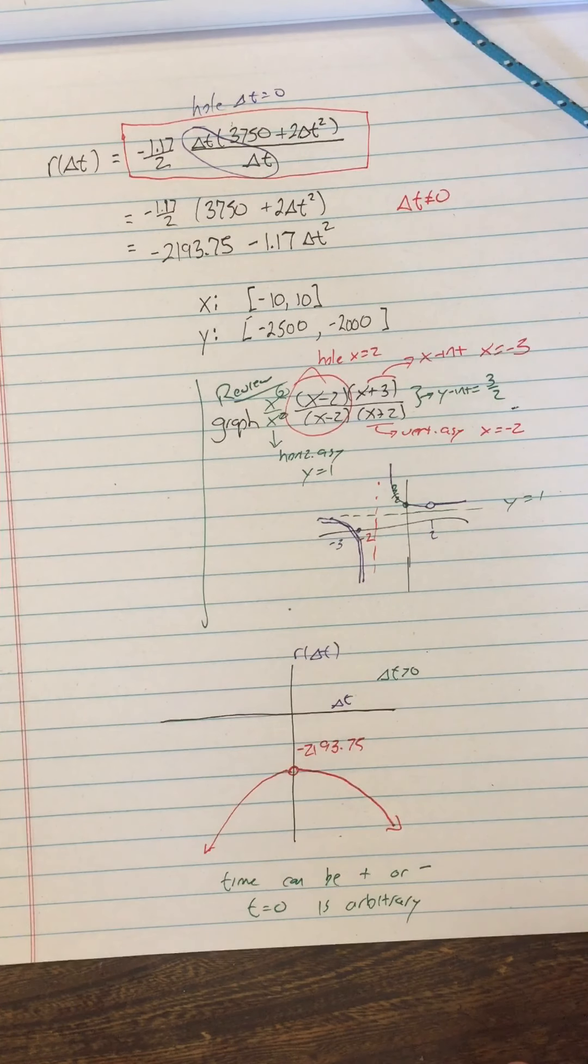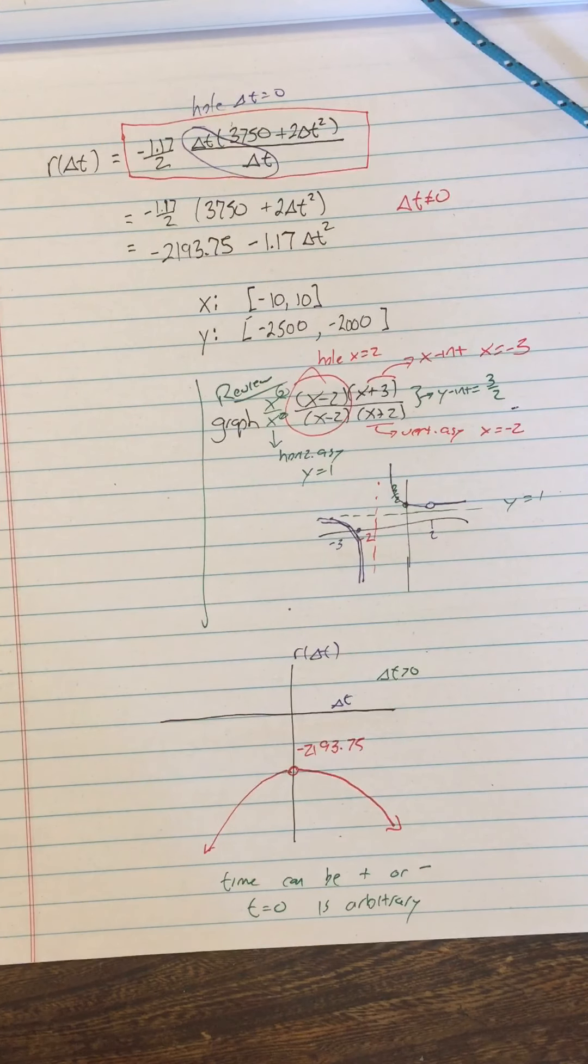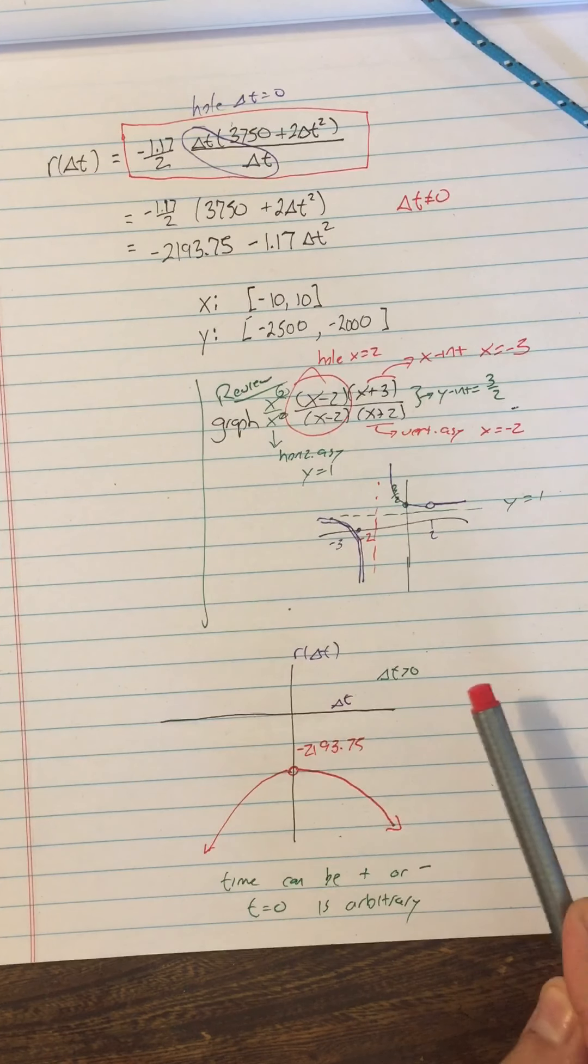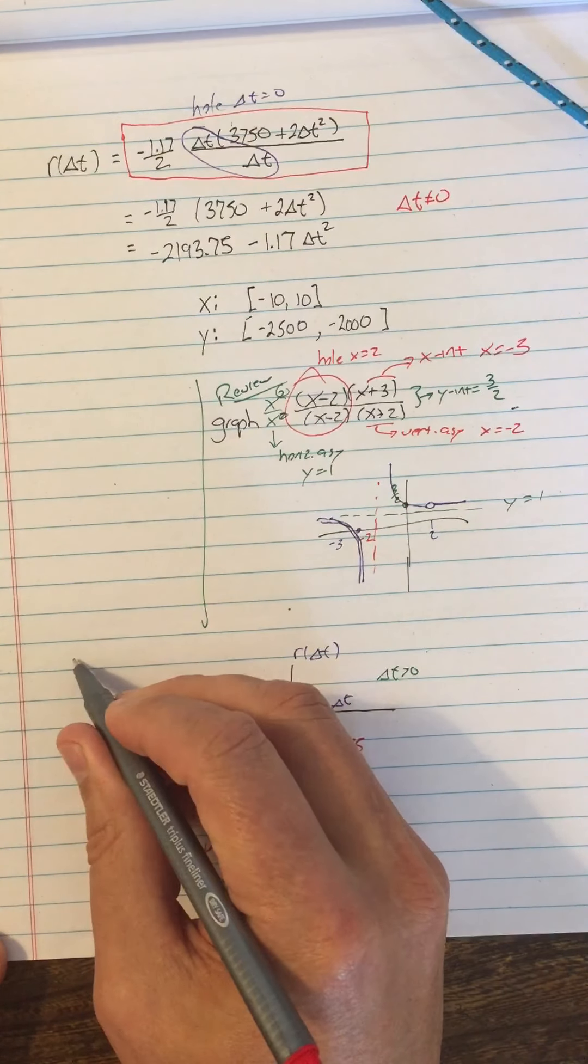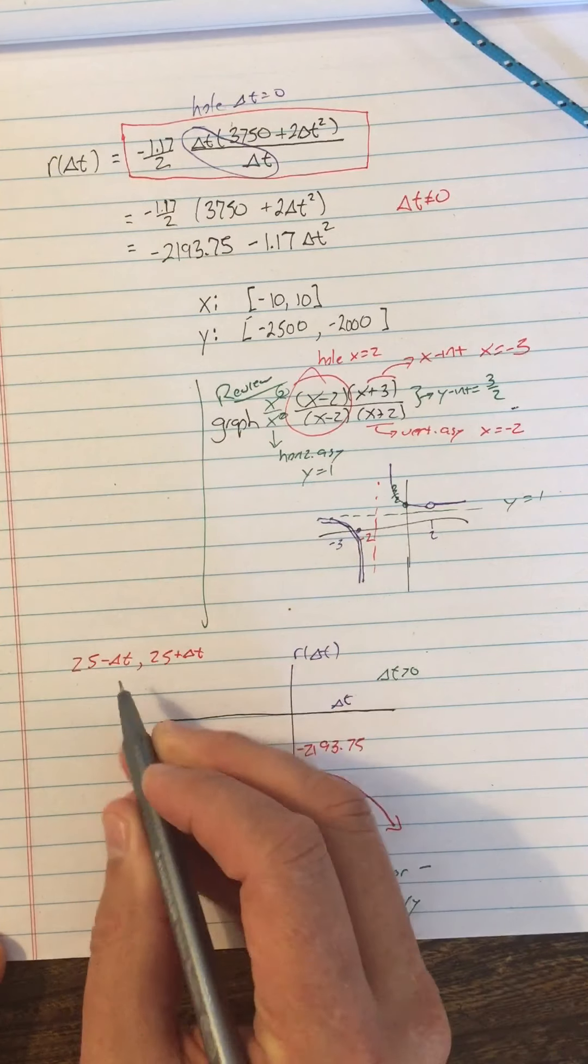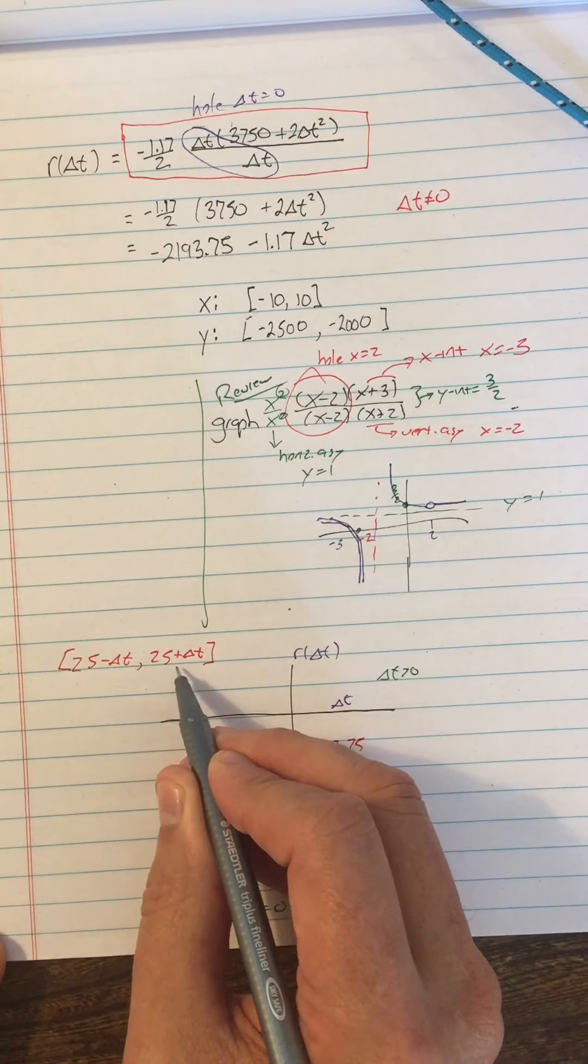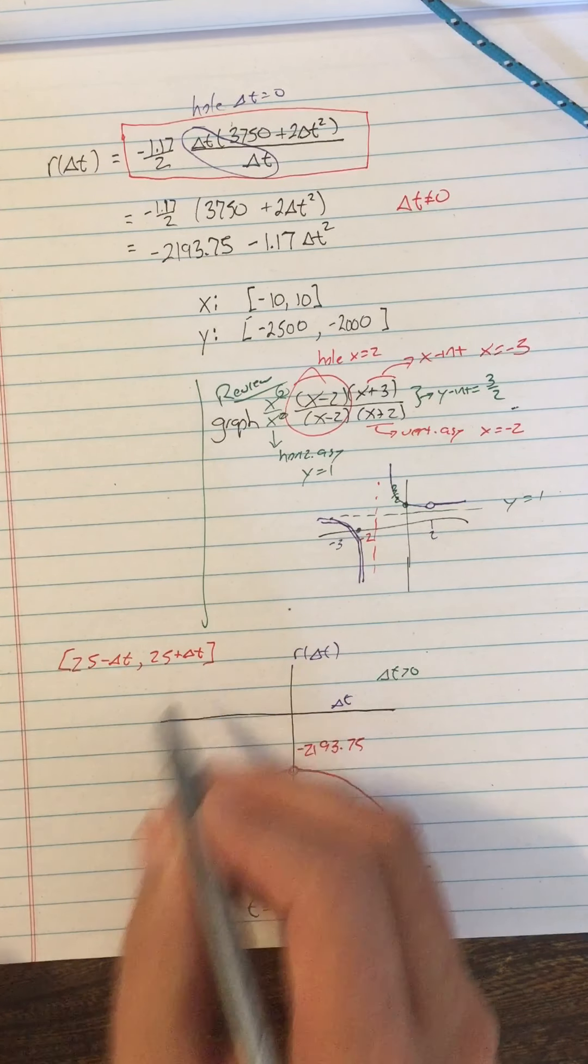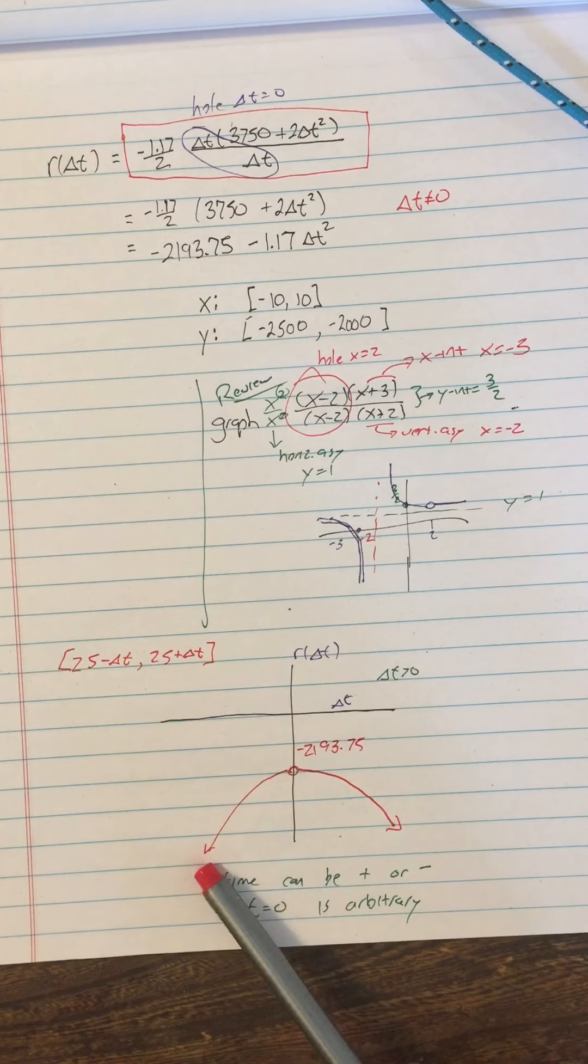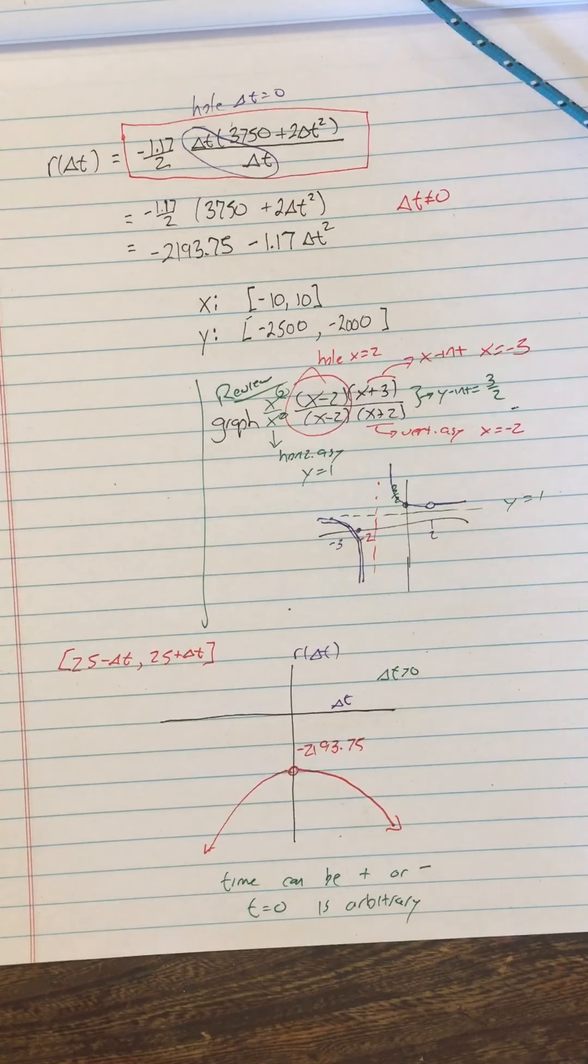All right, so time in general can be negative. However, delta t is the length of an interval of time, and the length of the interval of time cannot be negative. Essentially, like if you remember our interval goes from 25 minus delta t to 25 plus delta t. If delta t were negative, then 25 minus delta t would be greater than 25 plus delta t, and this interval would be improperly written. So you have a graph over here that's an artifact, not because time cannot be negative. Time can totally be negative. It just means before the arbitrary zero point. However, an interval of time cannot be negative in length.